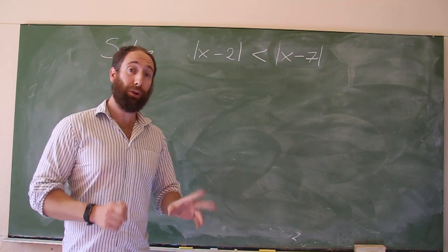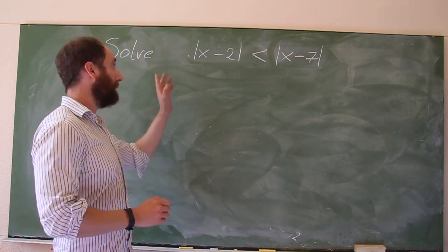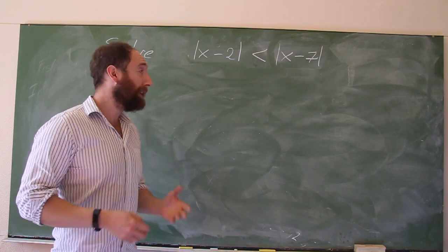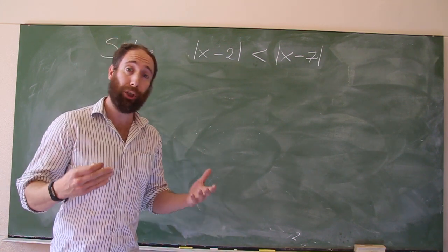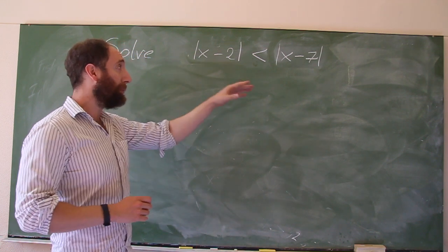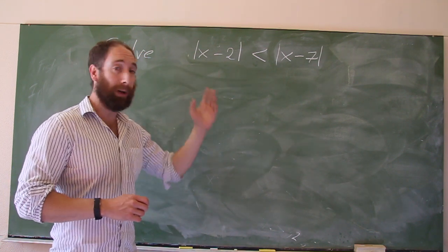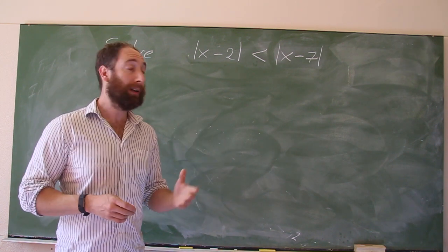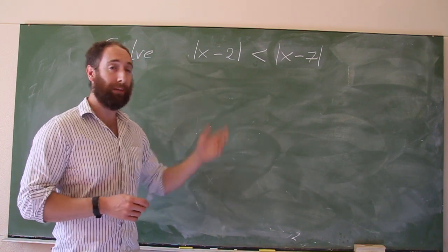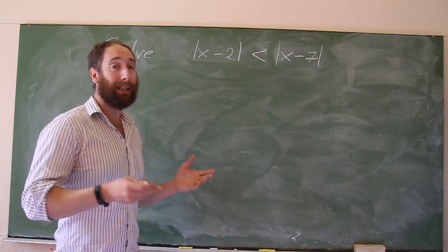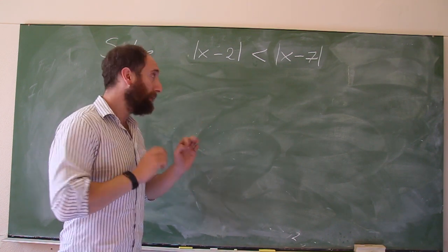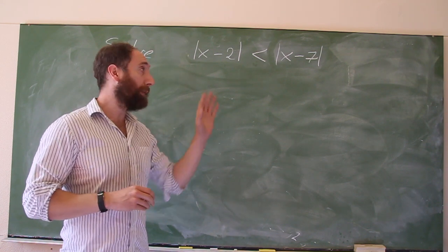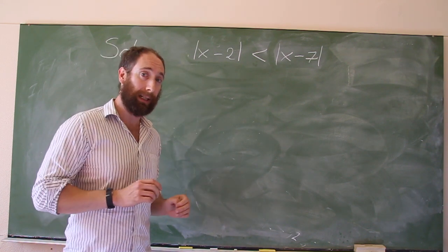We've seen two methods to solve this equation, and now we're going to look at a third method. This third method is more generalizable. We were able to square both sides, and that happened to work in this particular case, but it'll often be the case that if you've got an inequality involving absolute values, squaring both sides isn't actually going to work. So what we're going to do is come up with a piecewise defined function, which we'll be able to solve somewhat more easily.